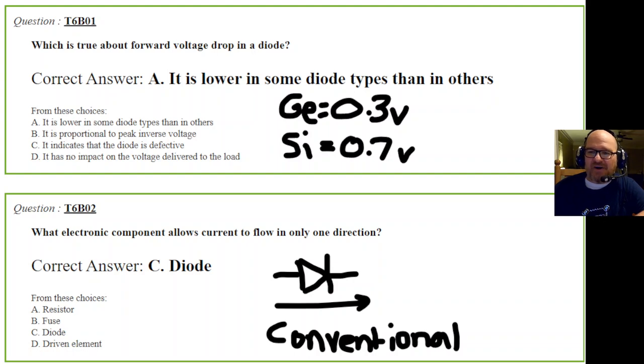Let's start with some diode questions. Question 1: Which is true about forward voltage drop in a diode? The correct answer is that it is lower in some diode types than in others. This is a lot of electronic terminology. Getting a book on basic electronics might help with your technician exam, but I hope my videos and drawings are helping you.